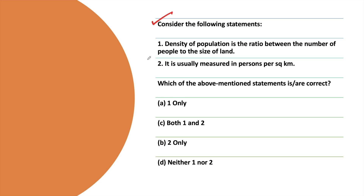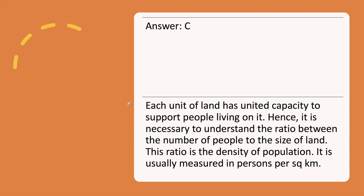Consider the following statements. Statement 1: Density of population is the ratio between the number of people to the size of land. Statement 2: It is usually measured in persons per square kilometer. Which of the above statements is correct? Pause the video, attempt the question, and then check your answer. The correct answer is option C, along with the explanation.